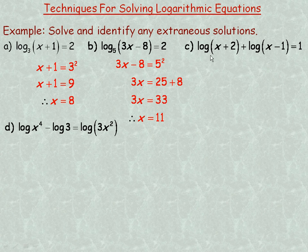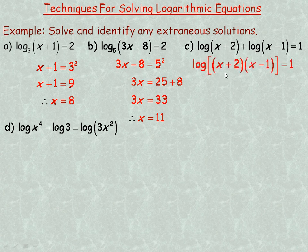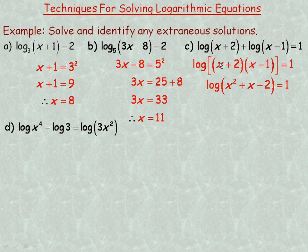On to example c — no extraneous roots yet, but we'll get one here. If you have more than one logarithm that are added, I want to rewrite that as a single logarithm using the product law. So I write it as the logarithm of the product of x plus 2 and x minus 1. Multiplying out: x times x is x squared, 2x minus x is x, and 2 times negative 1 is negative 2.